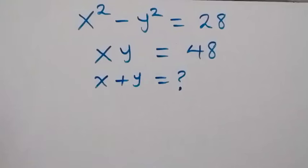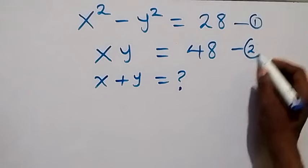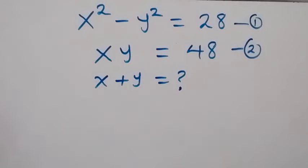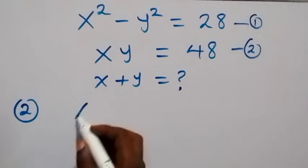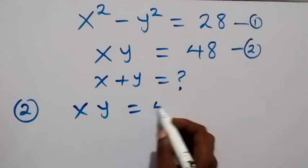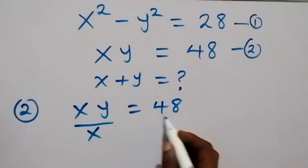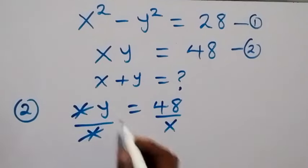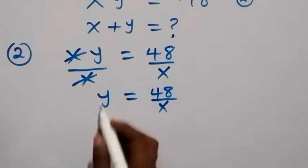Hello, you are welcome to solve this nice system of equations. Let this be equation 1 and this be equation 2. Here we are to find x plus y. From equation 2, which is xy equals 48, we can divide both sides by x in order to make y the subject, so we have y equals 48 over x.